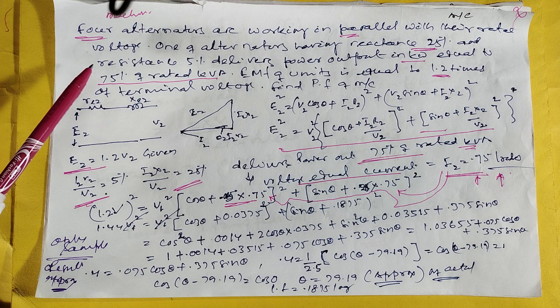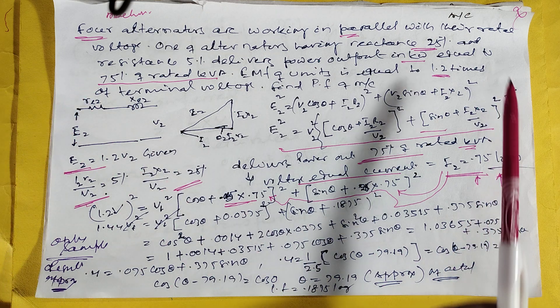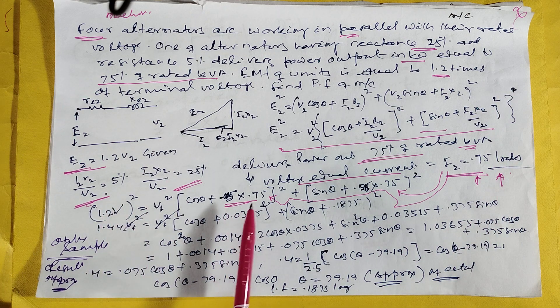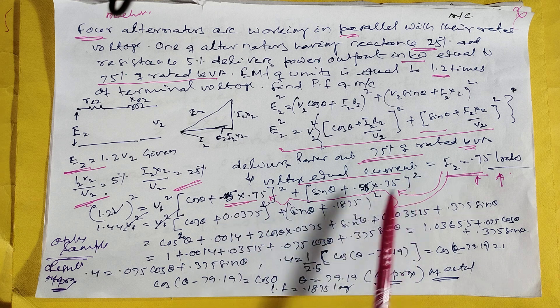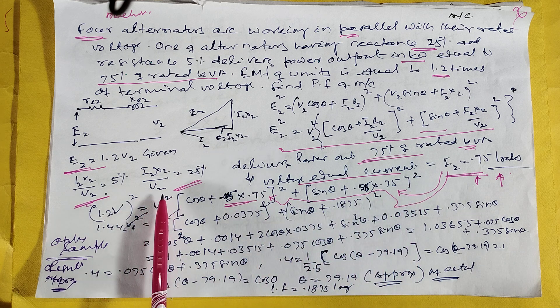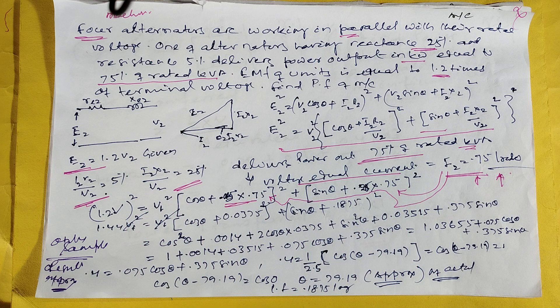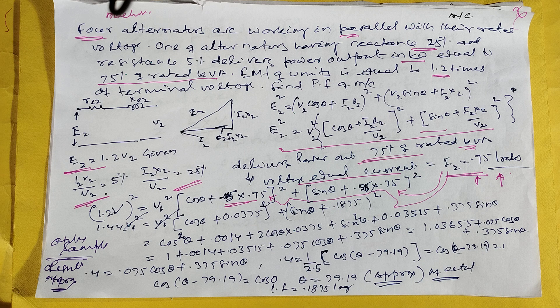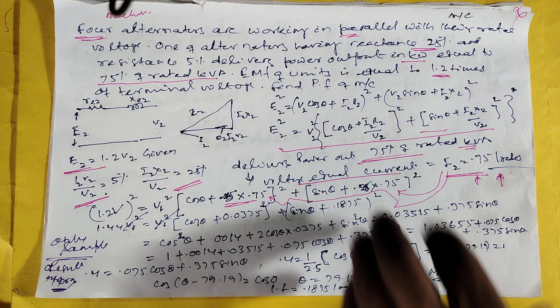One alternator running, reactance is given, resistance is given. One alternator coming 75.8 kVA. Emf equals 1.2 pu. This is my 75 added. This is the general equation. If you put everything, cos theta is coming 0.1875.